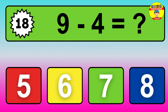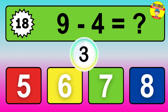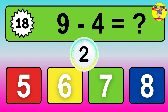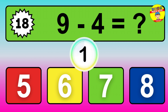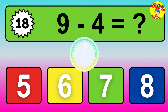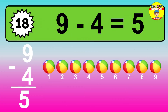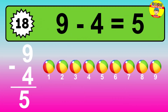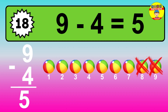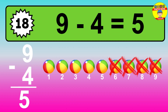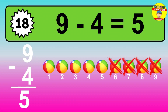Question 18: 9 minus 4 equals what? The answer is: 9 minus 4 is 5. Let's count it: 1, 2, 3, 4, 5.